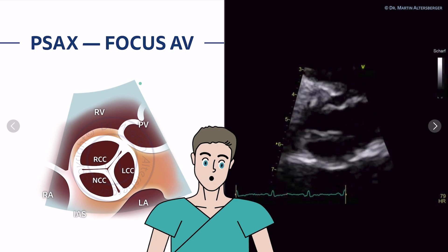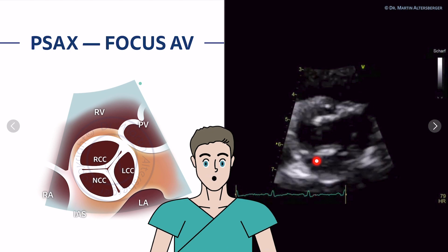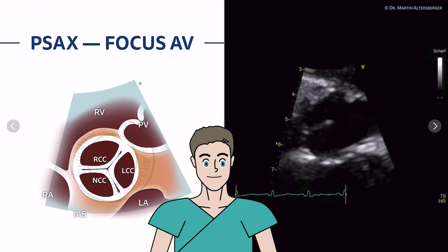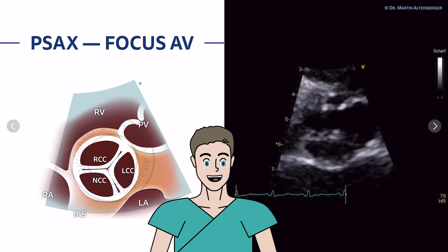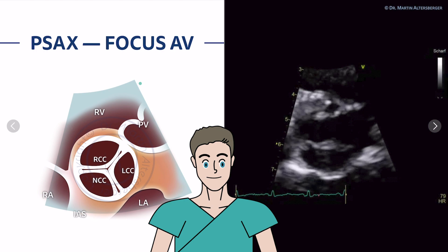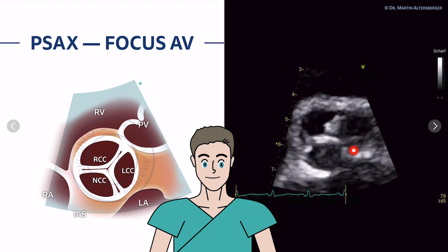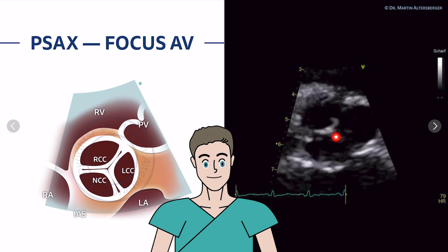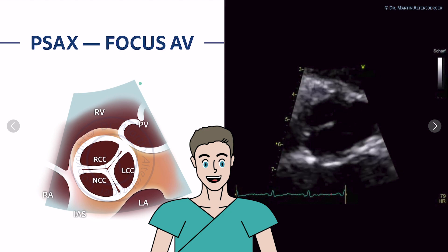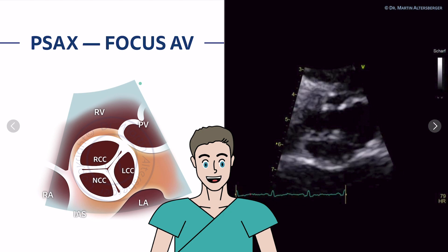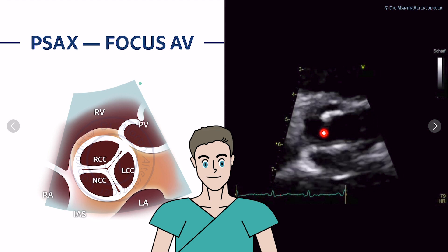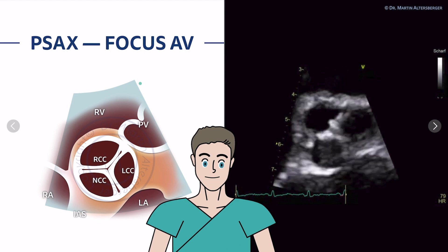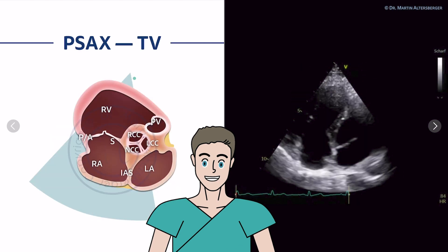The next view is a focused view of the aortic valve, where we zoom in — the same approach we use in the parasternal long axis view. In this focused view, we see that the aortic valve has three cusps and appears somewhat sclerotic or calcified, but there is no severe stenosis present, as the opening of the aortic valve is preserved. Always focus on the aortic valve in the parasternal short axis view as well.